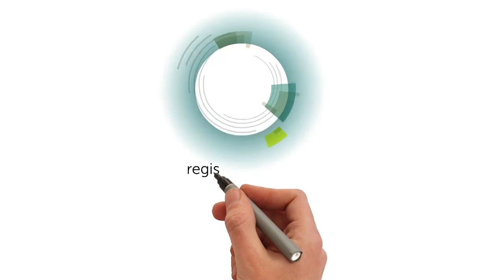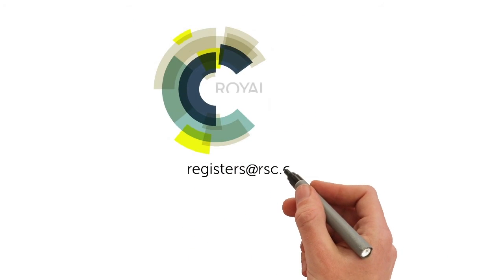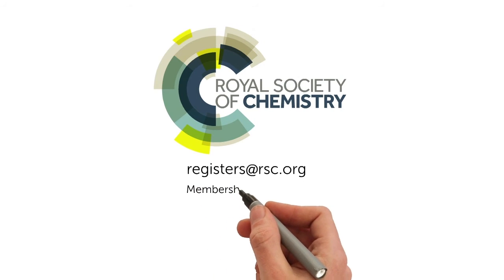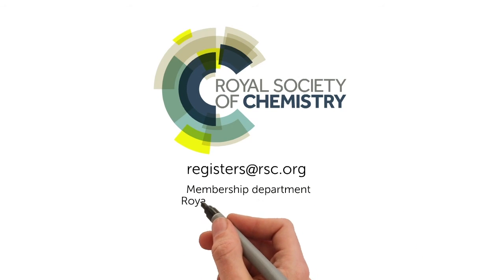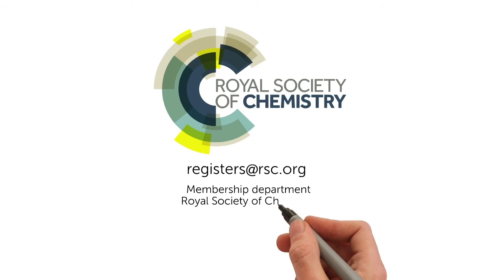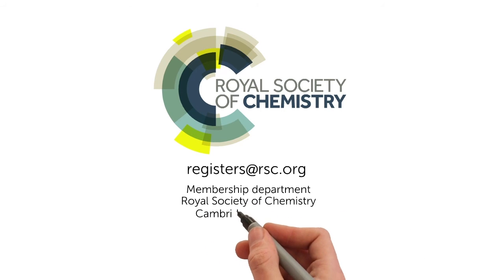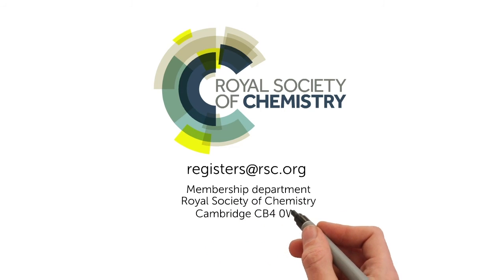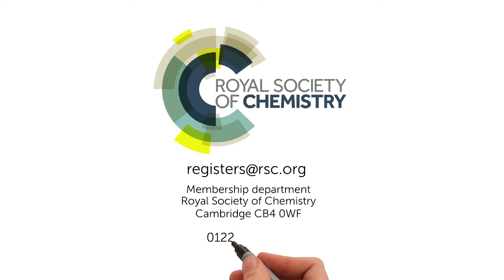You can submit your application form via email or by post. And if you need any support completing your form, contact the Technical Registration Specialist at registers@rsc.org or phone 01223 432 141. We'll be happy to help.